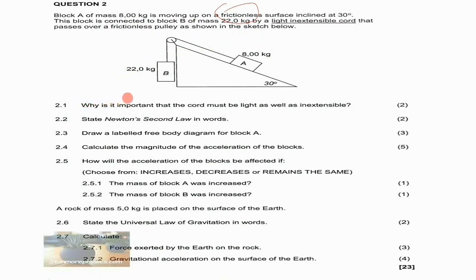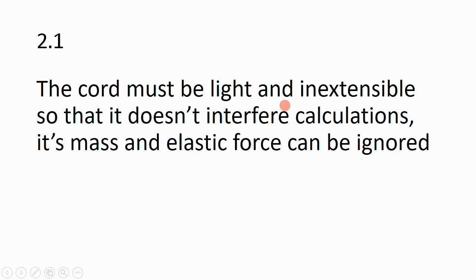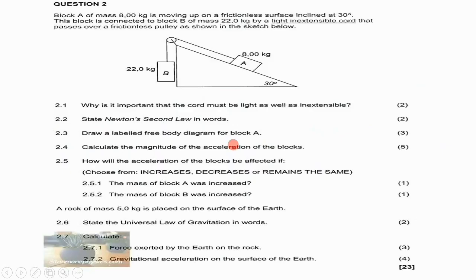Question 2.1 asks why it is important that the cord must be light as well as inextensible. The cord must be light and inextensible so that it doesn't interfere with calculations — its mass and elastic force can be ignored.